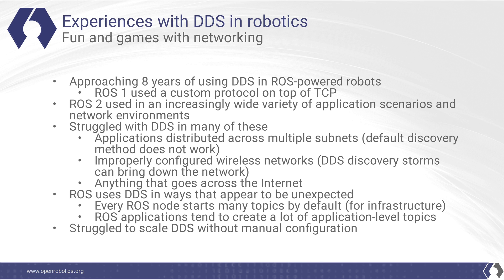The reason for this is because we have had eight years of using DDS in ROS-powered robots. ROS1 used a custom protocol on top of TCP; ROS2 switched to DDS. But ROS2 is being used in an increasingly wide variety of application scenarios and network environments. This means that we have struggled with DDS in many of these cases, because these applications are often distributed across multiple subnets where the default discovery method of DDS does not work, there may be improperly configured wireless networks, and a DDS discovery storm can easily bring down a network — including anything that goes across the internet, which is becoming increasingly common in robotics.